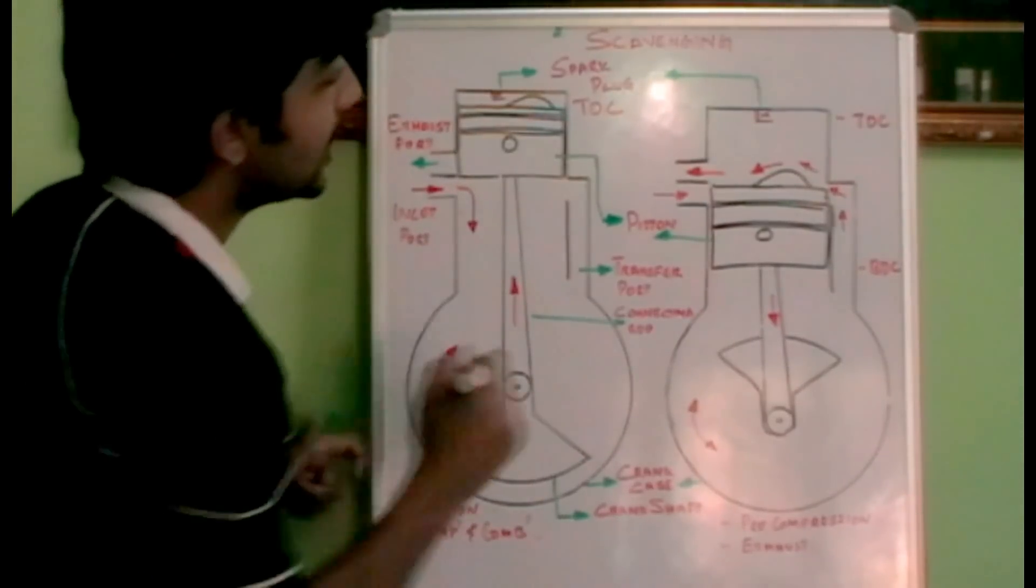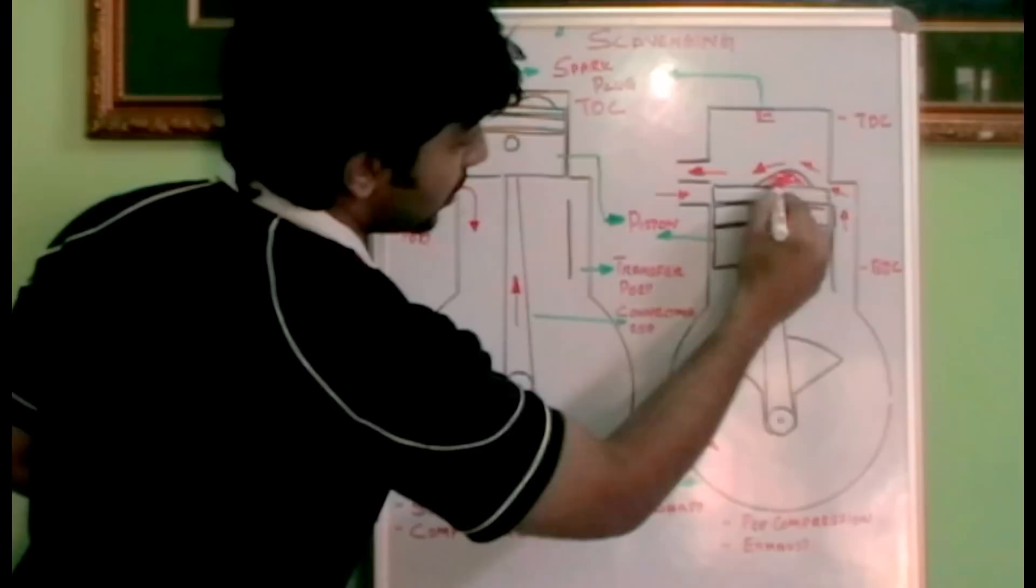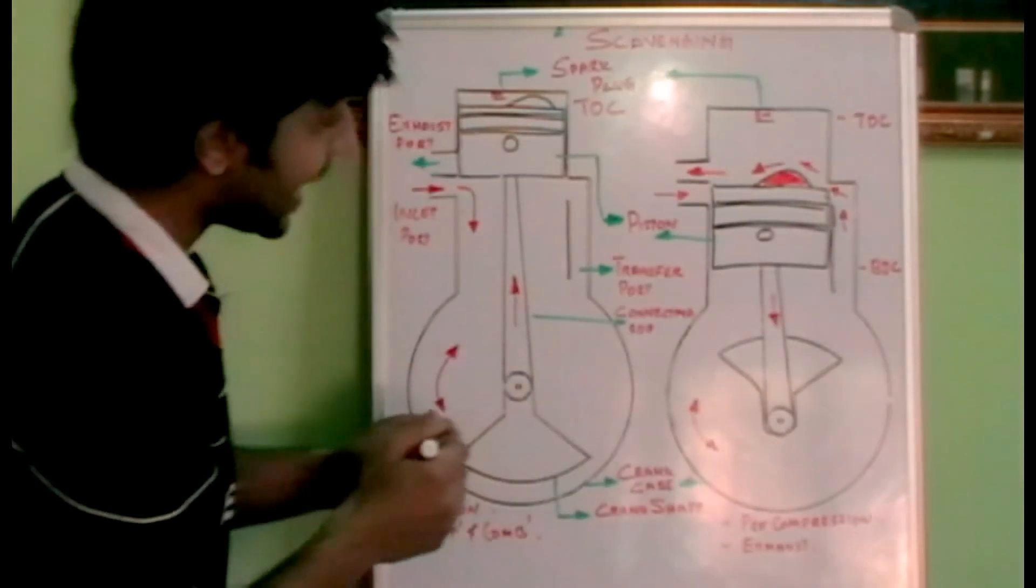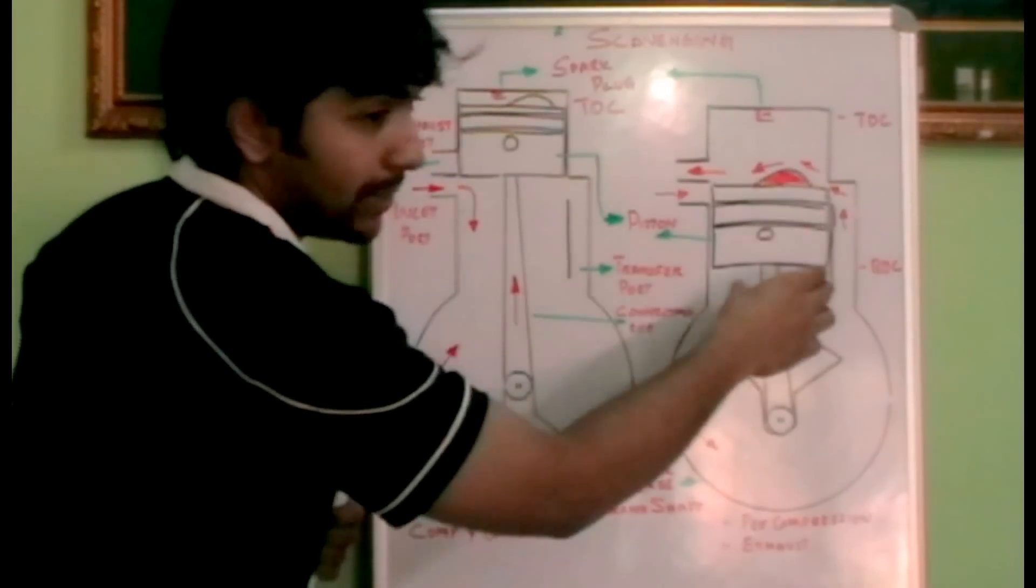Let's see how it happens. You can see a modification at the top of the piston - there is a projection on the top. This helps with the scavenging process. When the piston is at bottom dead center, that is at BDC...